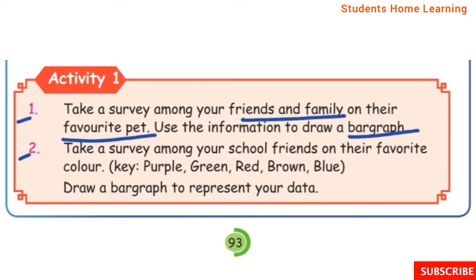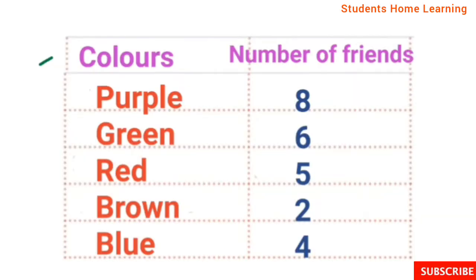Activity 2: Take a survey among your school friends on their favourite colour — Purple, Green, Red, Brown, Blue. Draw a bar graph to represent your data. Colors and number of friends: Purple 8, Green 6, Red 5, Brown 2, Blue 4.